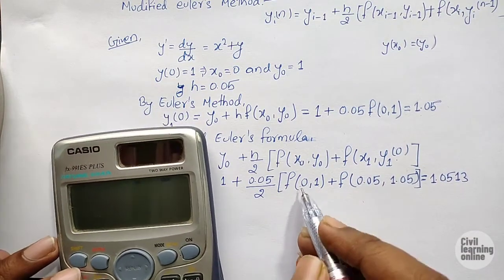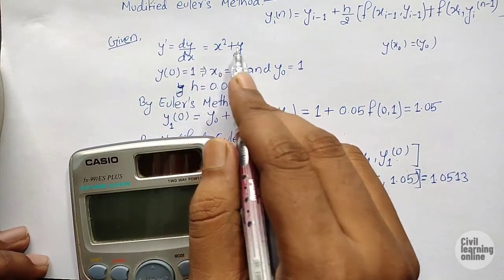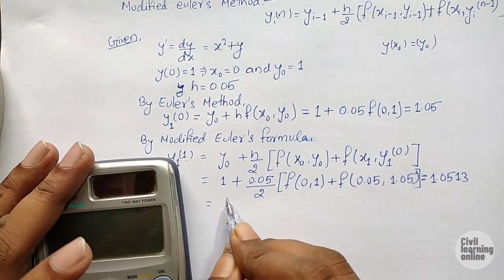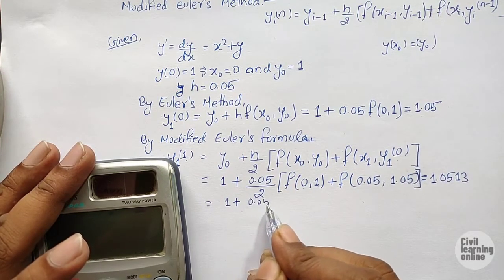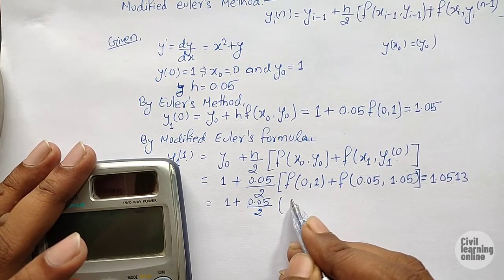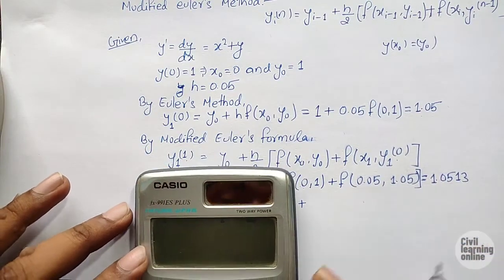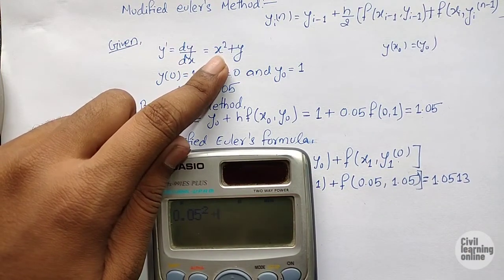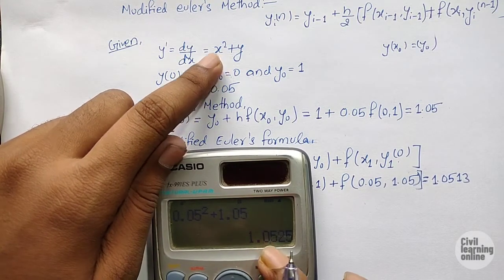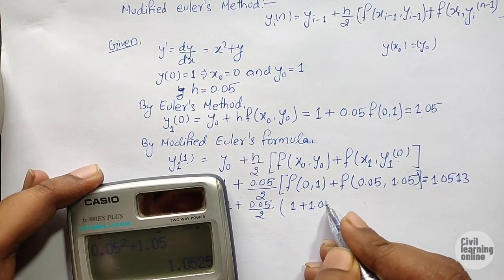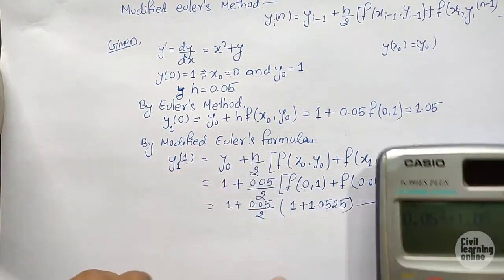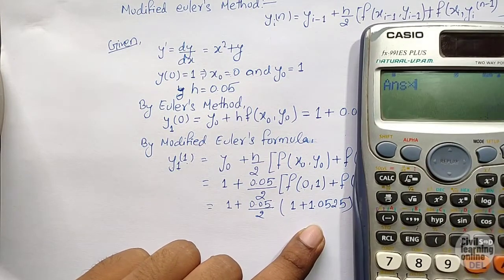Let me show how to calculate this using the calculator. f(0,1) gives 0 plus 1 equals 1. Then we compute 1 plus (0.05/2) times [1 plus f(0.05, 1.05)], where f(0.05, 1.05) equals (0.05)² plus 1.05 equals 1.0525. Adding these with the calculator we get 1.0513.